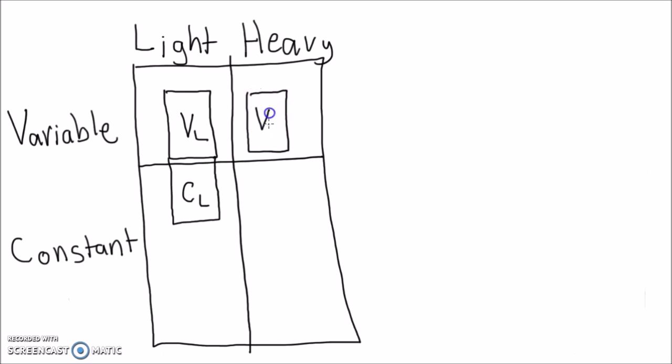Each heavy chain has a variable region known as VH and three constant regions known as CH1, CH2, and CH3.